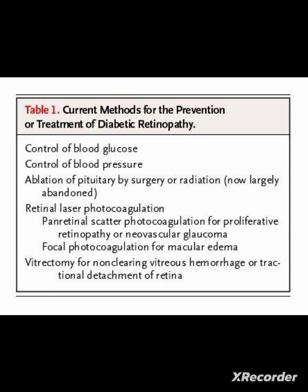In some cases, ablation of the pituitary by surgery or radiation may be performed — specifically in cases of pituitary tumour. However, in diabetic retinopathy there is no need for pituitary ablation. The main management is to control blood glucose level and blood pressure, then retinal laser photocoagulation: pan-retinal scatter photocoagulation for proliferative retinopathy or neovascular glaucoma, focal photocoagulation for macular edema, and vitrectomy for non-clearing vitreous hemorrhage or tractional detachment of the retina. Cataract surgery may also be performed in cases of diabetic retinopathy.